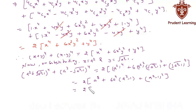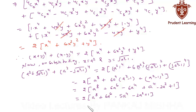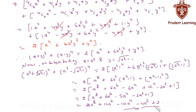Expanding further: 2(a⁸ + 6a⁶ - 6a⁴ + (a⁴ - 2a² + 1)), which gives 2(a⁸ + 6a⁶ - 5a⁴ - 2a² + 1). The final answer is 2a⁸ + 12a⁶ - 10a⁴ - 4a² + 2.